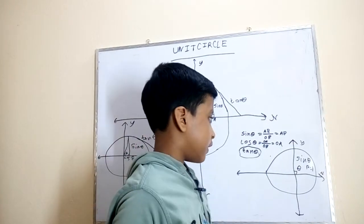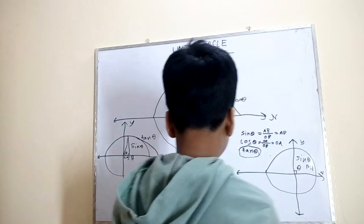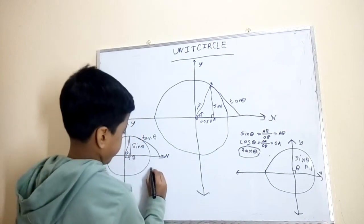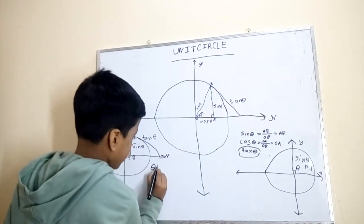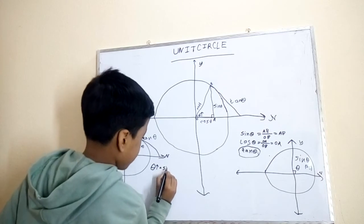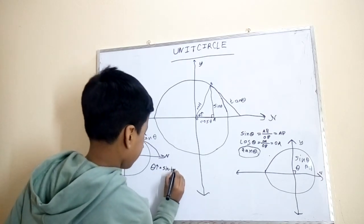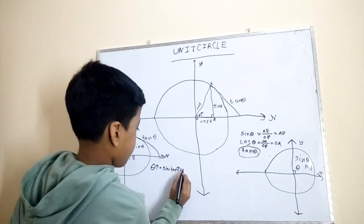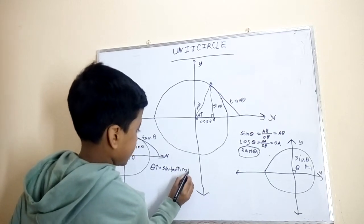So we can write a formula for it like this: as theta increases, sine and tan increase but cos decreases.